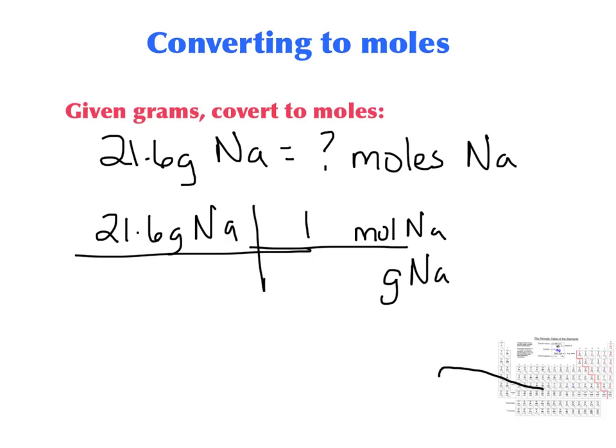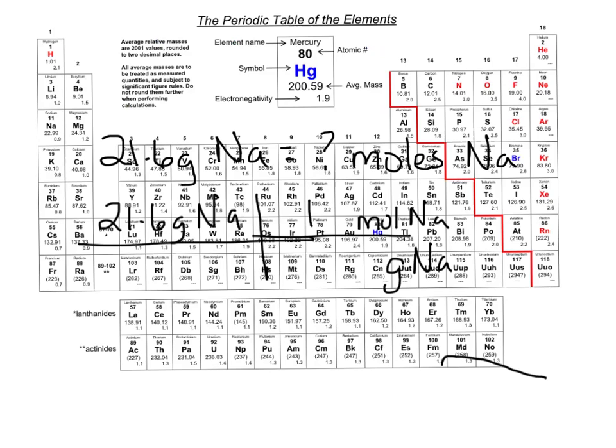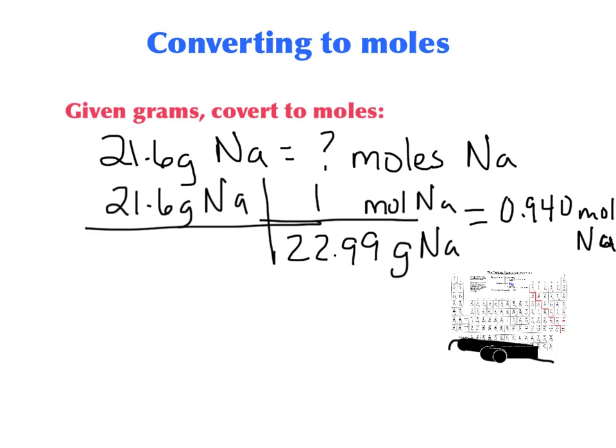How do we get the grams? We've got to look at our periodic table. I brought our periodic table up and back right here. If we look at sodium right here up in the corner, this is the molar mass, which means grams per mole. That says 22.99. So I'm going to put 22.99 grams of sodium per 1 mole of sodium. Then I just calculate that out. When I calculate that, I get 0.940 moles of Na. We're not going to stop there from now on, but we just got to remember that this is the process to go from grams to moles.